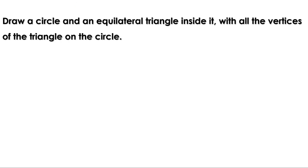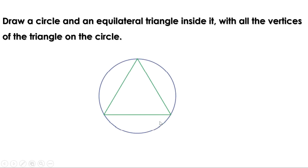Today we are going to learn how to draw a circle and an equilateral triangle inside it with all the vertices of the triangle on the circle. We have to draw a circle and an equilateral triangle like this. The sides of the triangle are chords of the circle.